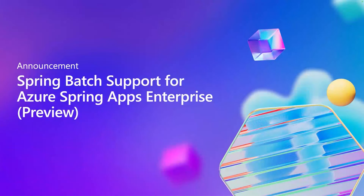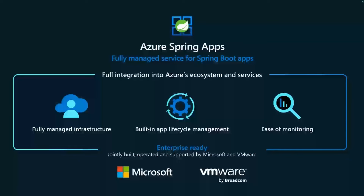I am excited to share new features we added to Azure Spring Apps Enterprise that make it simple, easy and cost efficient to run your Spring Batch applications. Azure Spring Apps Enterprise is a fully managed service that helps you focus on your application code and not infrastructure. It is a set of application lifecycle management features built on Kubernetes. It allows you to deploy, run and manage your apps without worrying about Kubernetes infrastructure. You can simply deploy your jars or point Azure Spring Apps to your code repository, and Azure Spring Apps will automatically build, deploy, run and manage your application.